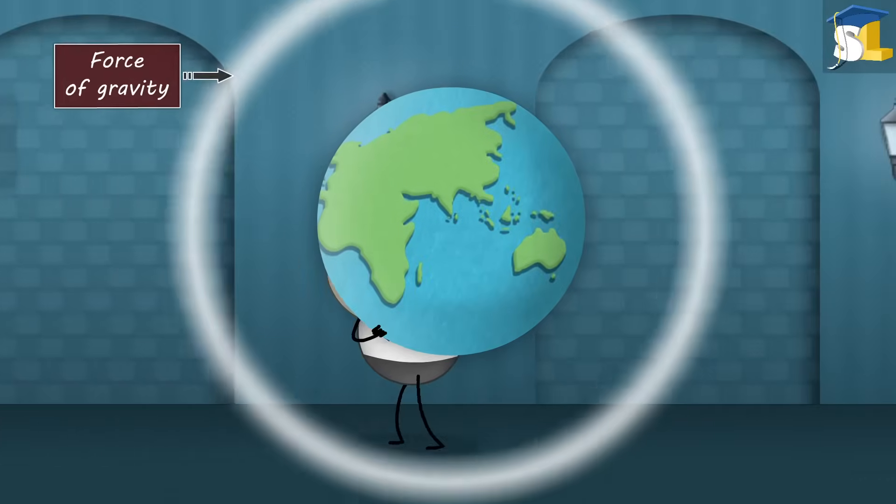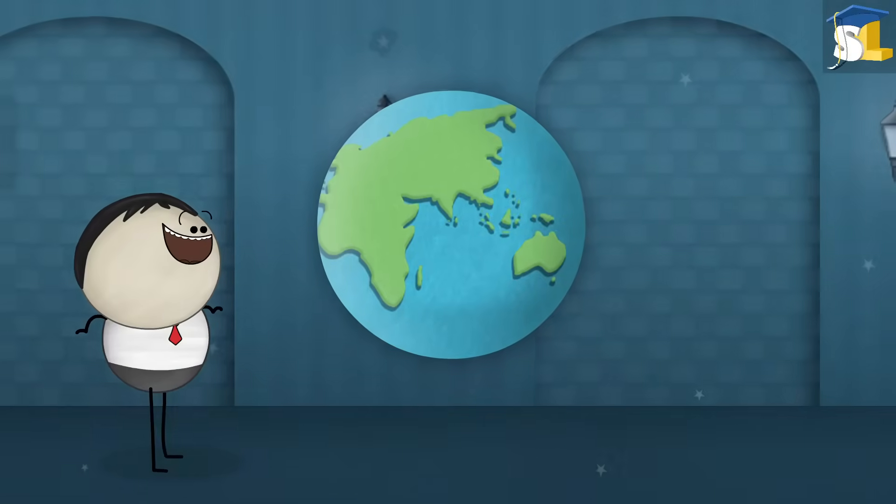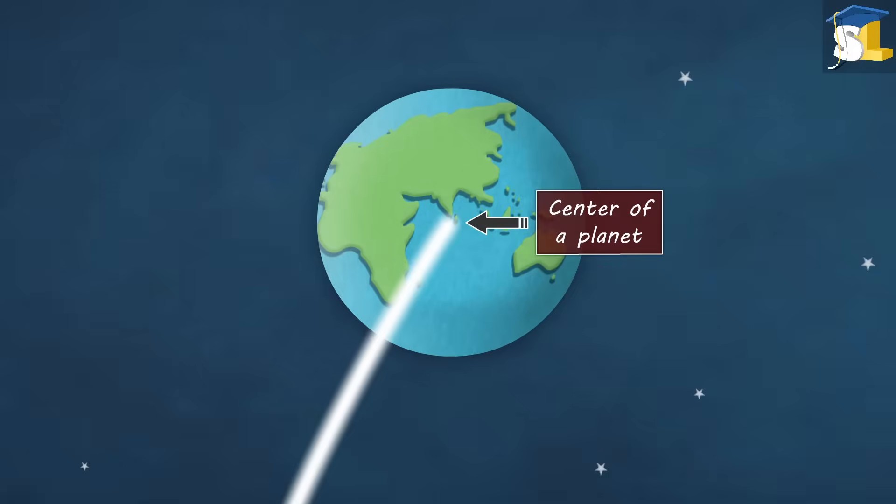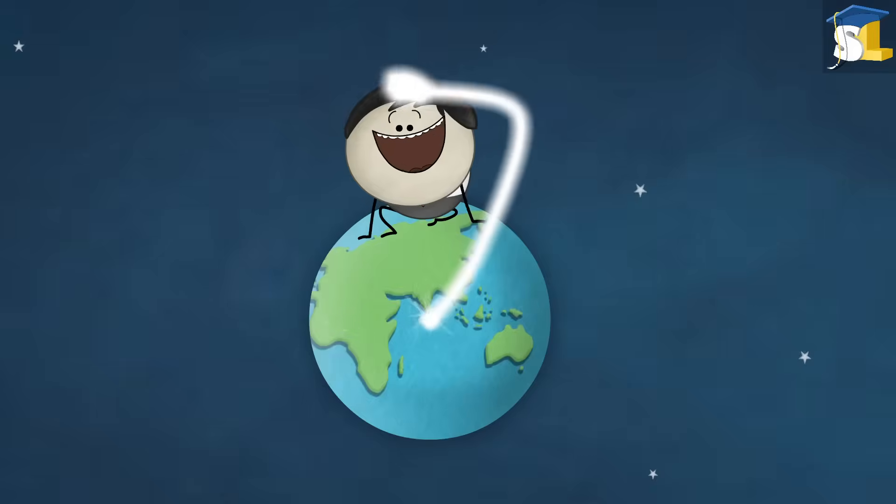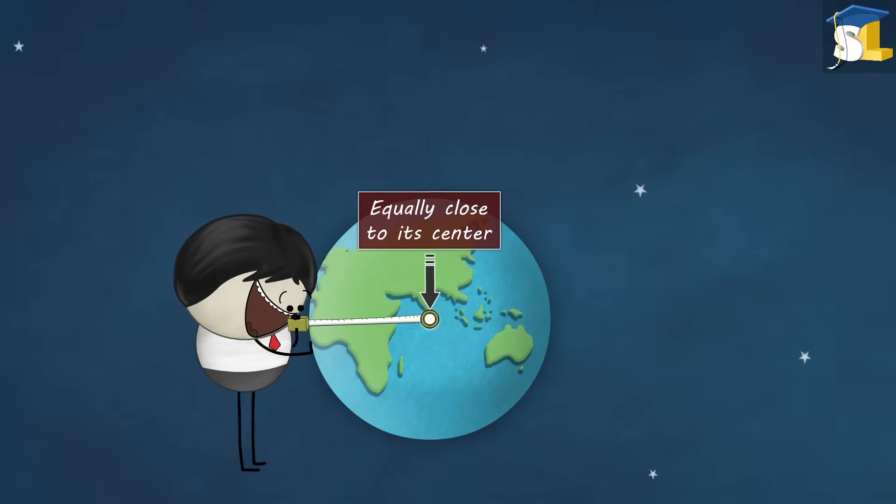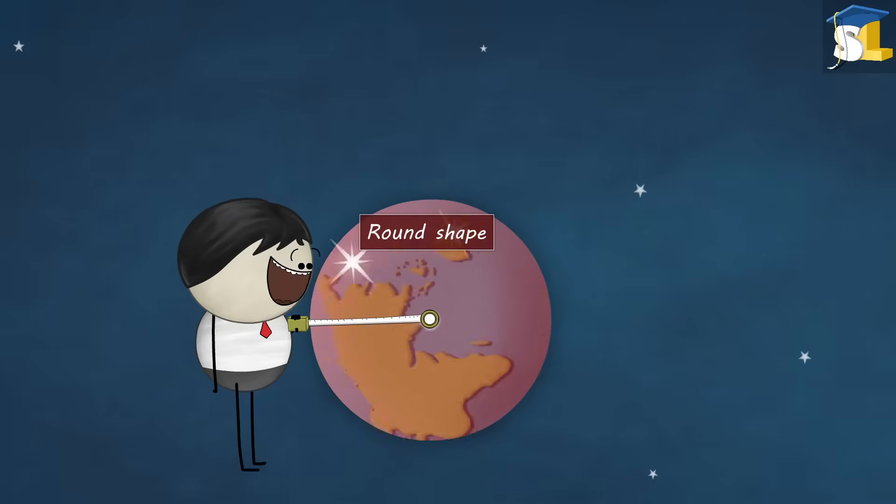Planets are round because of the force of gravity. Gravity acts as if it originates from the center of a planet and pulls each point of the planet towards it. Hence, the only way for everything on the surface to be equally close to its center is to form a round shape.